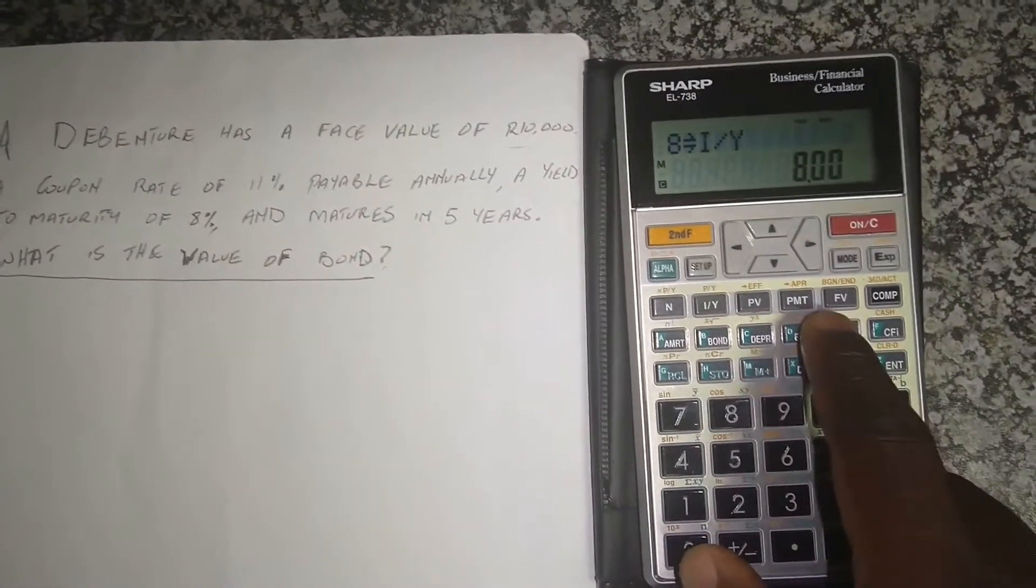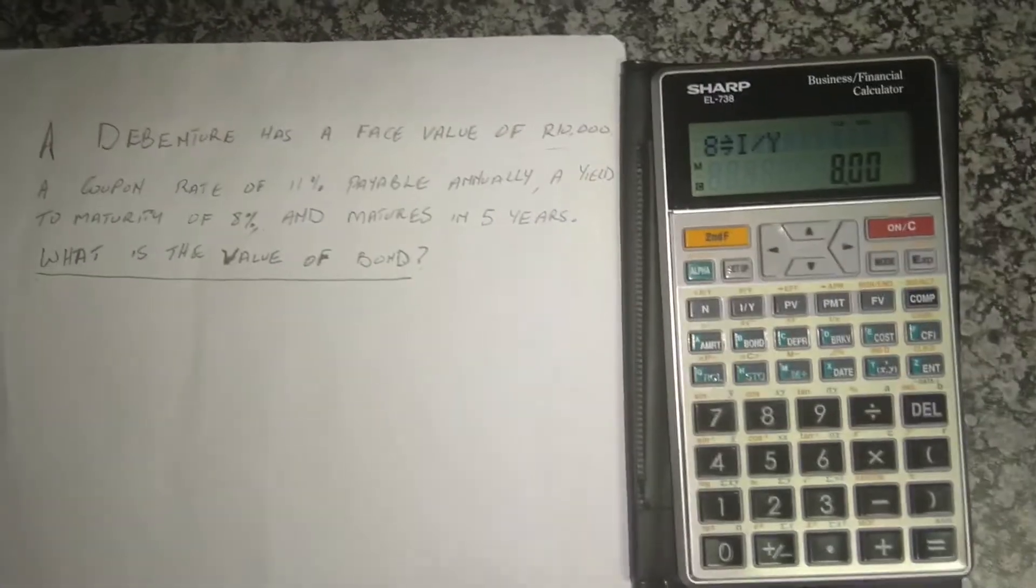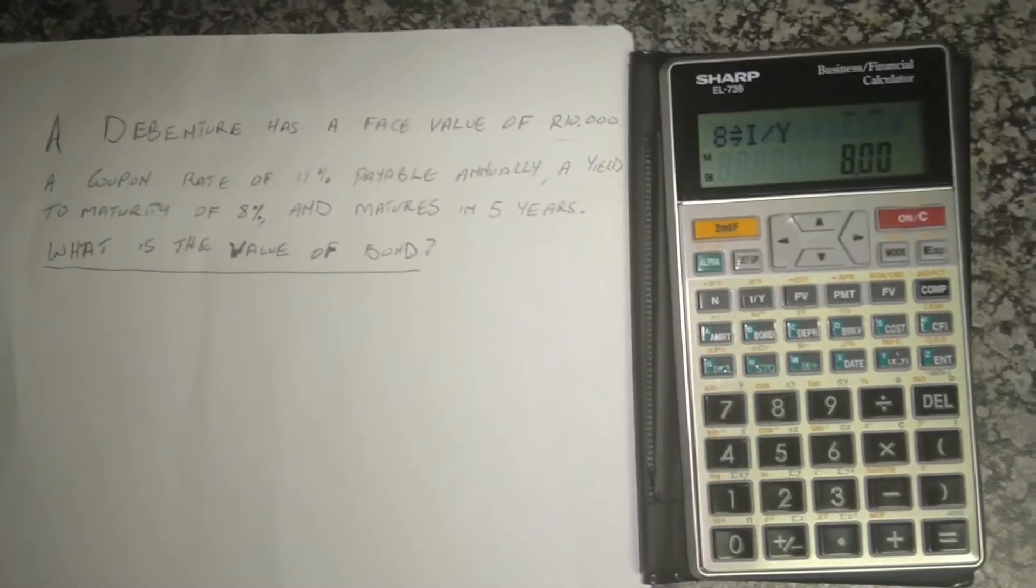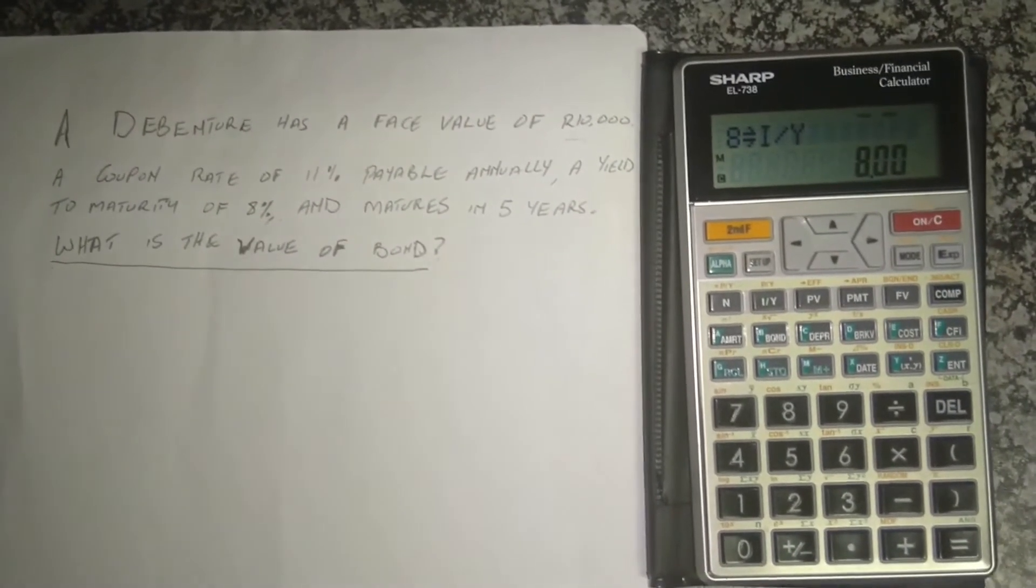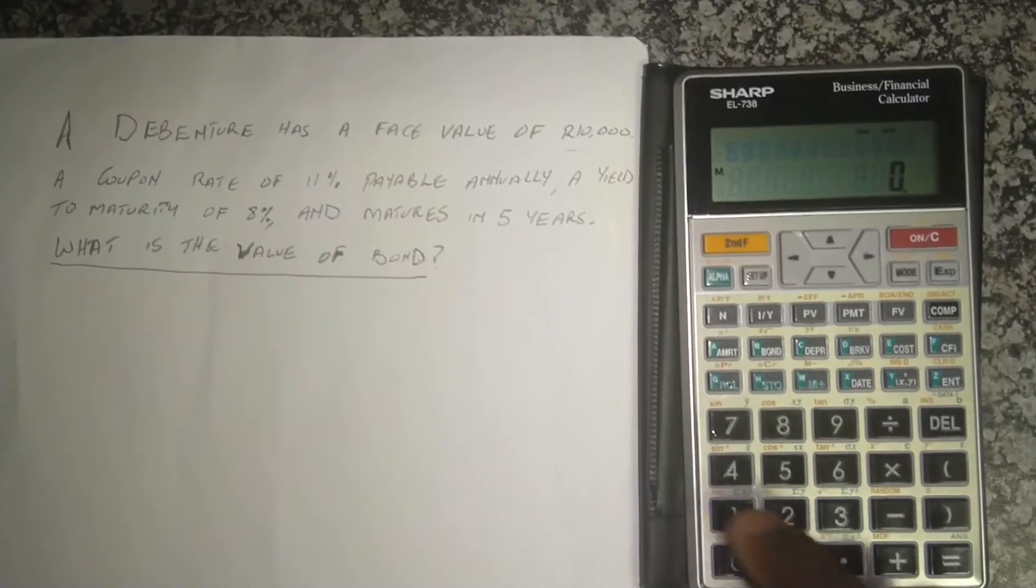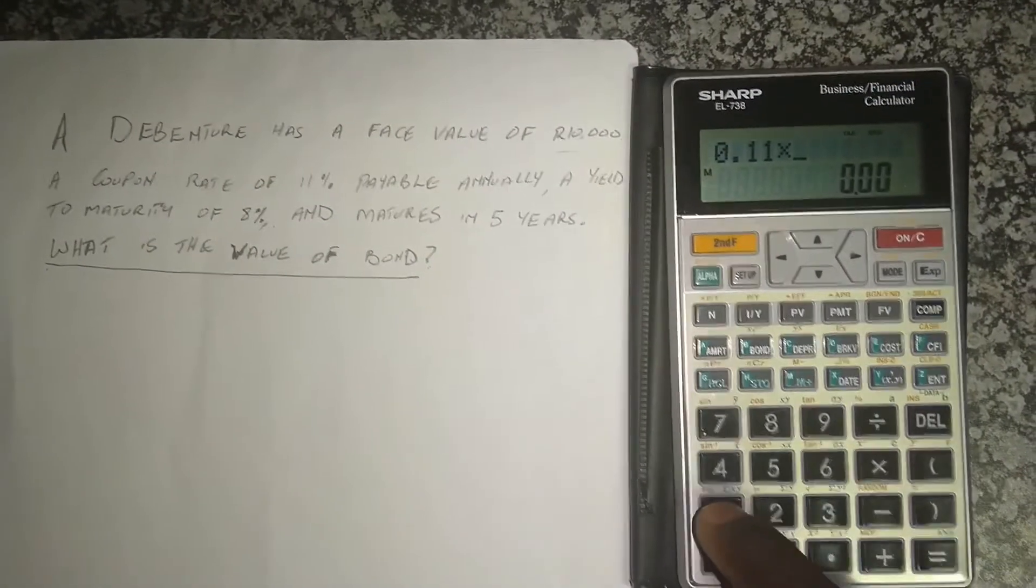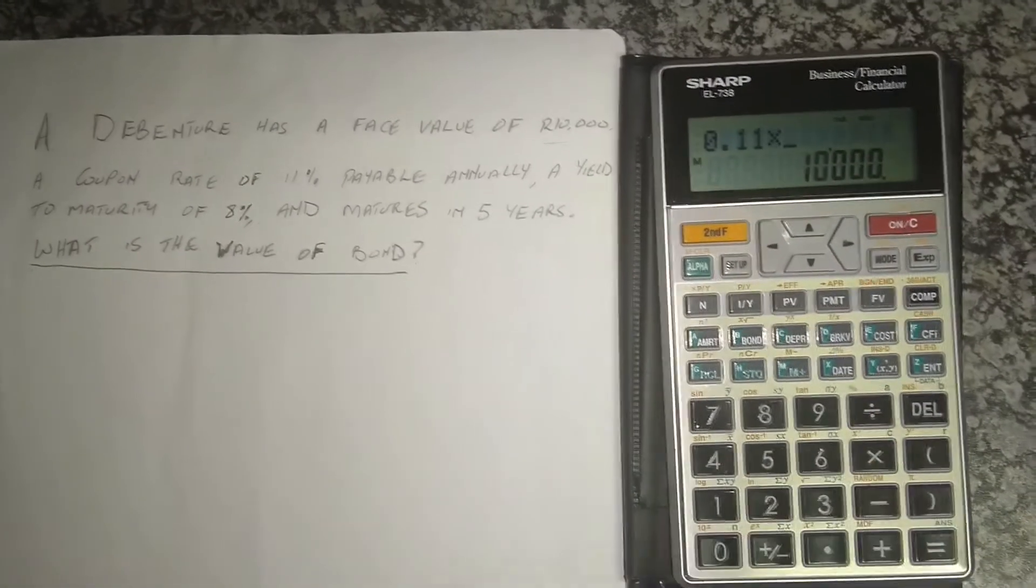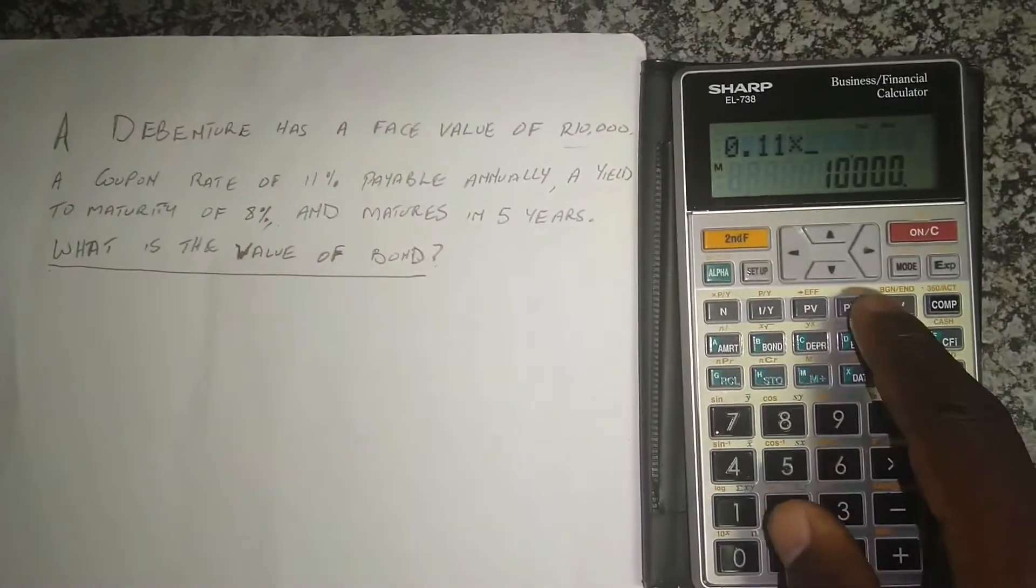And then we go to PMT. What is the PMT? Is the recurring payments. What is that? That is the interest rate that will be paid. So that is the eleven percent times the ten thousand rand which you just calculated.